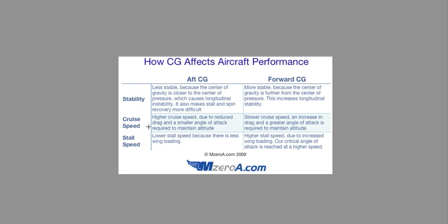Cruise speed: an aft CG gives us a higher cruise speed. This is due to the reduced drag and smaller angle of attack required to maintain altitude. Versus the forward CG — it's a slower cruise speed, an increase in drag because we need a greater angle of attack with that forward CG.